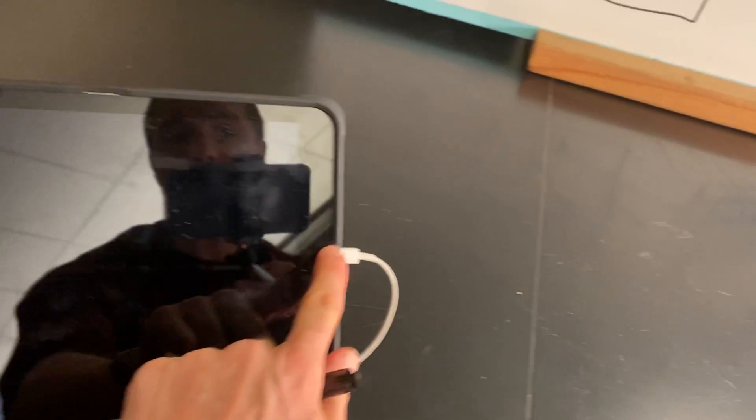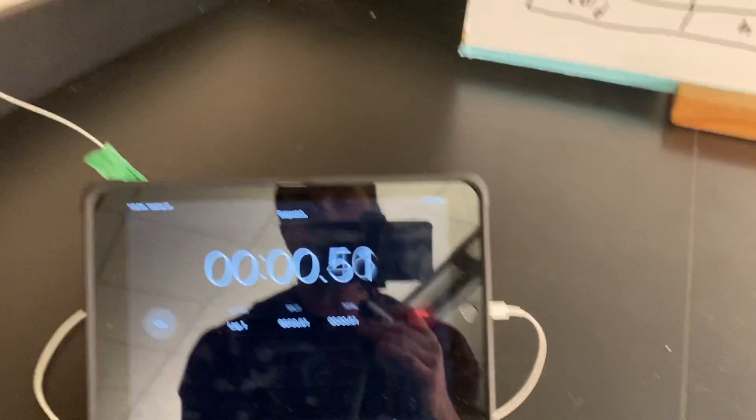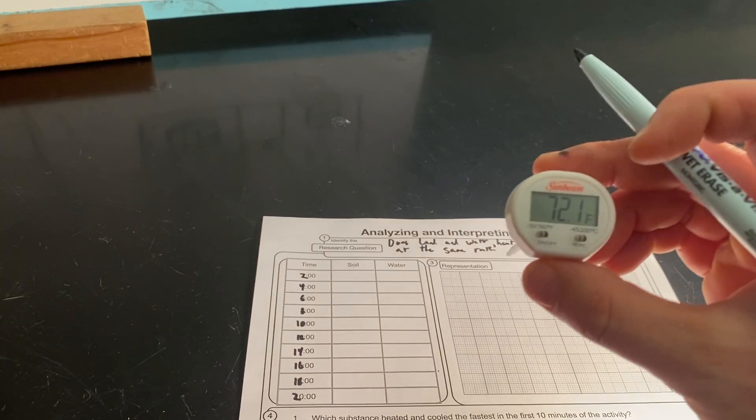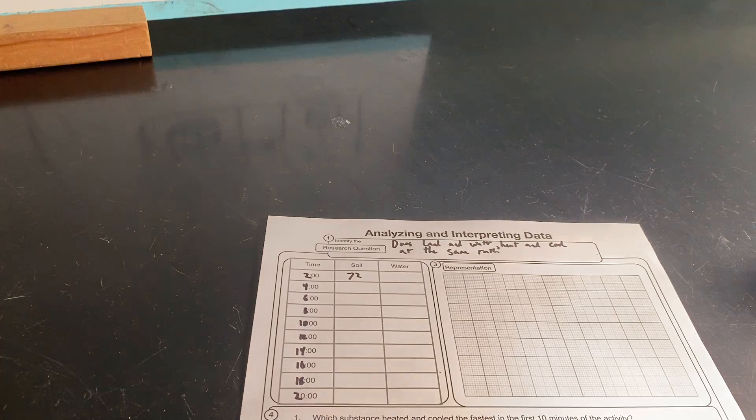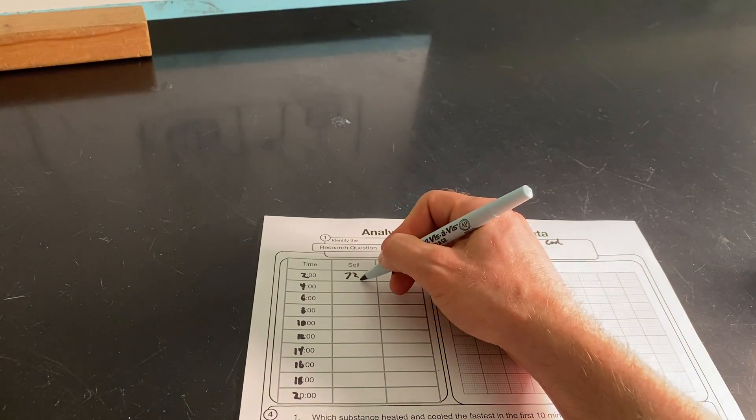You'll just start every two minutes - maybe you want to set an alarm - every two minutes you'll write down the temperatures. So like soil, I'll say if this was two minutes, the temperature was 72 and the water was 68.7. Sorry, this is 70.